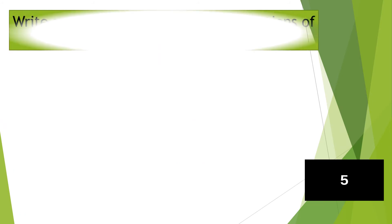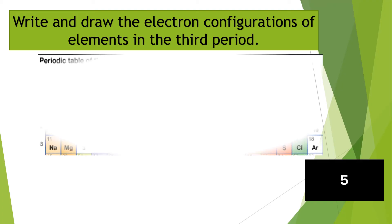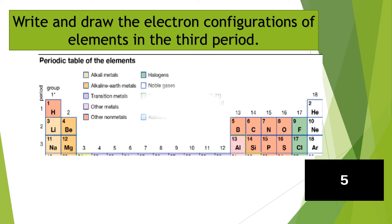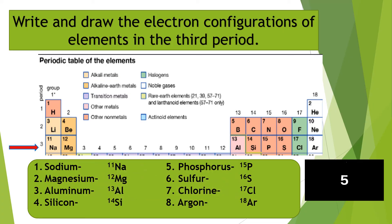For one minute, write and draw the electron configurations of elements in the third period: sodium, magnesium, aluminum, silicon, phosphorus, sulfur, chlorine, and argon.